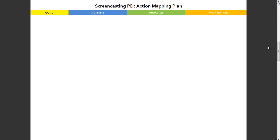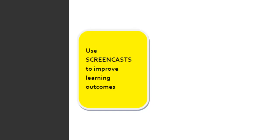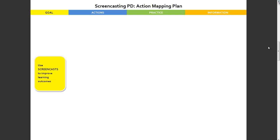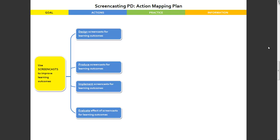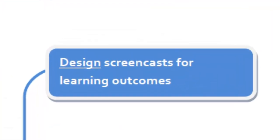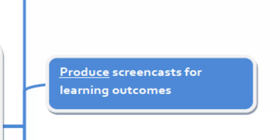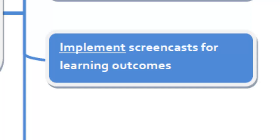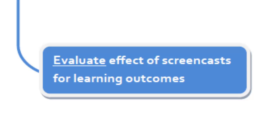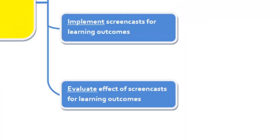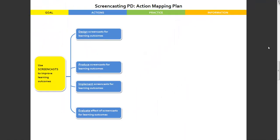If we start with our goal - the actual goal here, which is a fairly broad one - it was to use screencasts to improve learning outcomes. We already had an indication that screencasts can be really effective and engaging, with lots of benefits for the design of our learning program. Based on that, I came up with four broad actions: things teachers need to be able to do to meet that goal - to design screencasts for learning outcomes, to produce screencasts, to implement them as part of a learning process, and to evaluate their effect on learning outcomes.